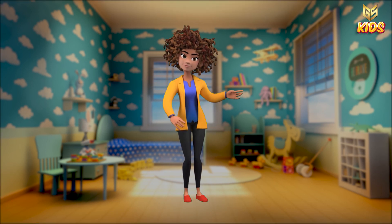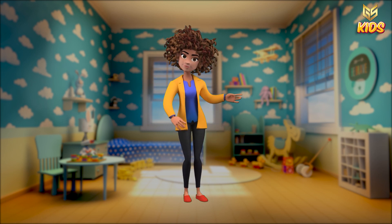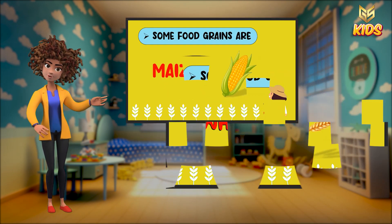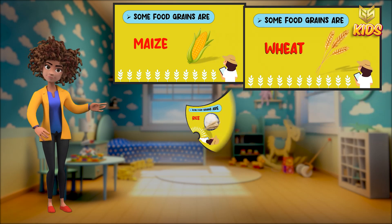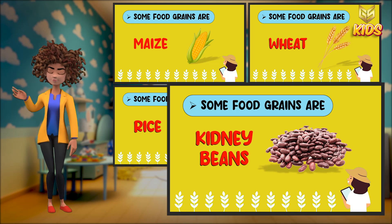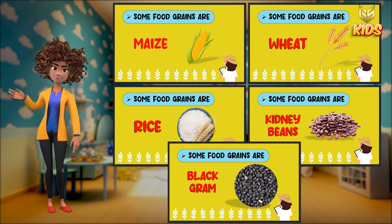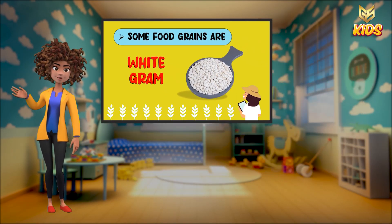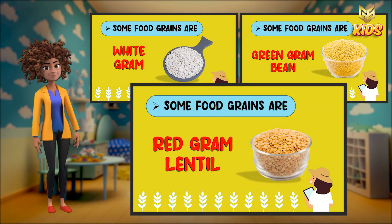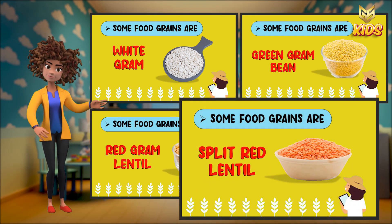So these are some grains. Let's repeat all the names of the grains again: maize, wheat, rice, kidney beans, black gram, white gram, green gram bean, red gram lentil, split red lentil.